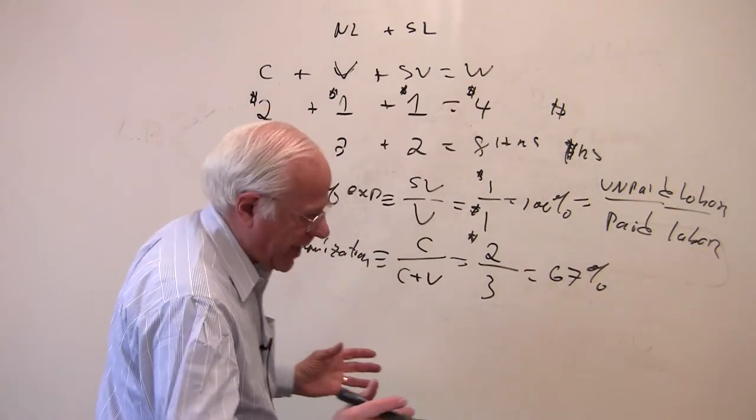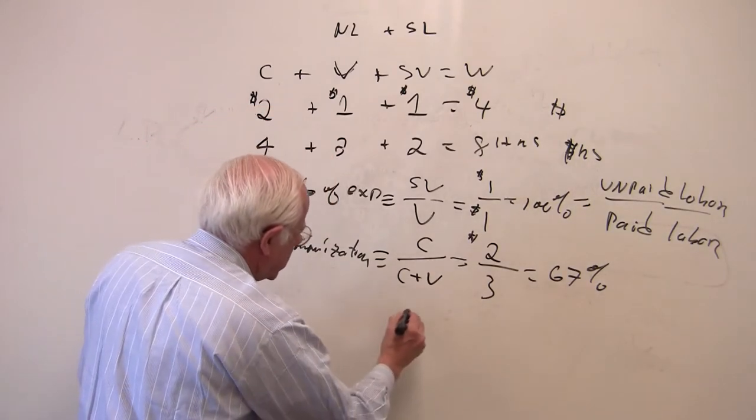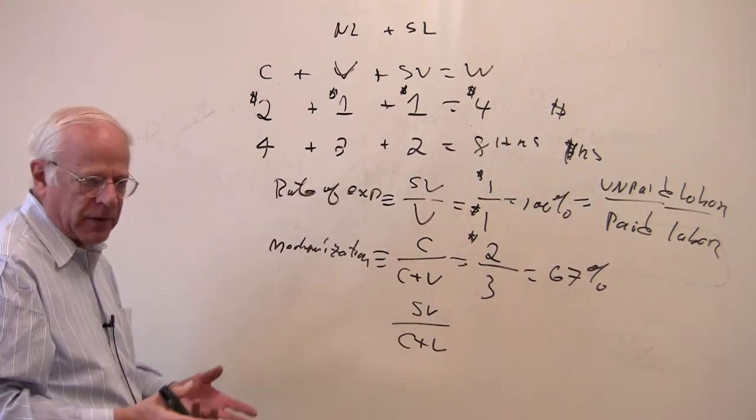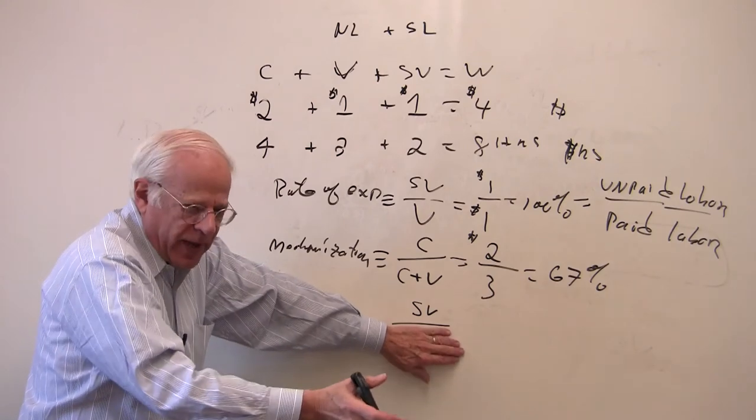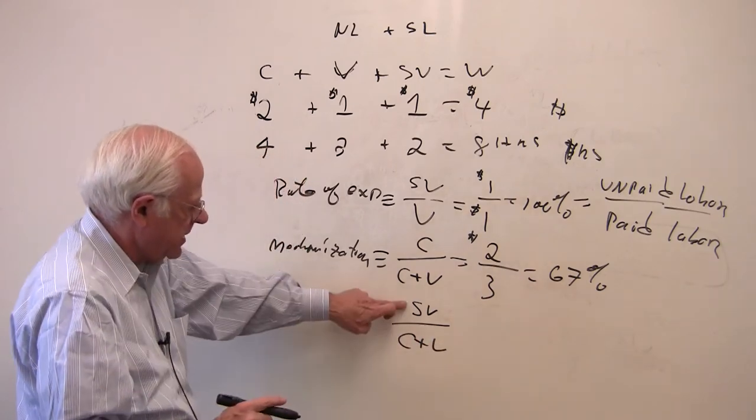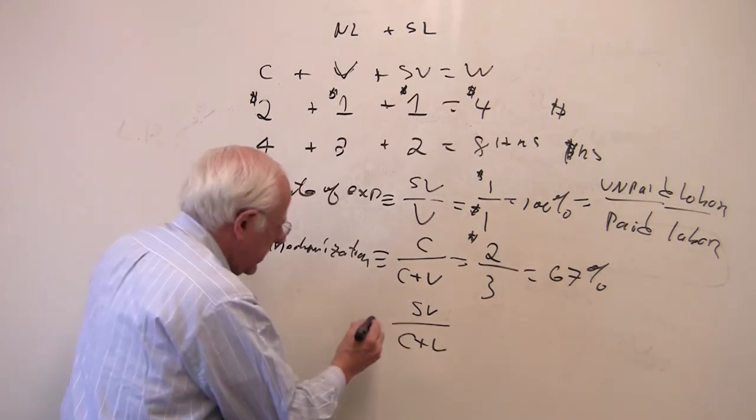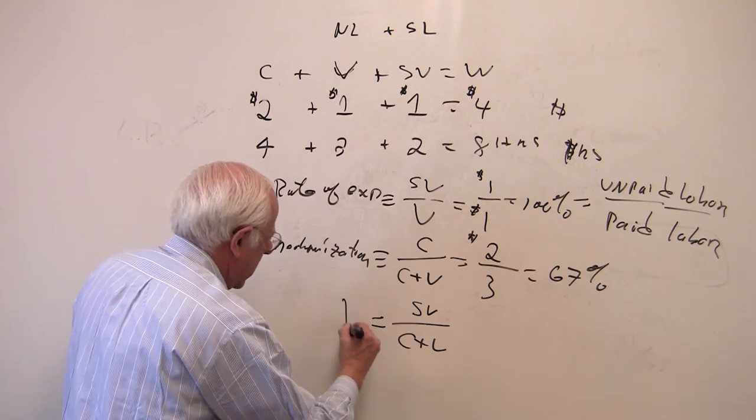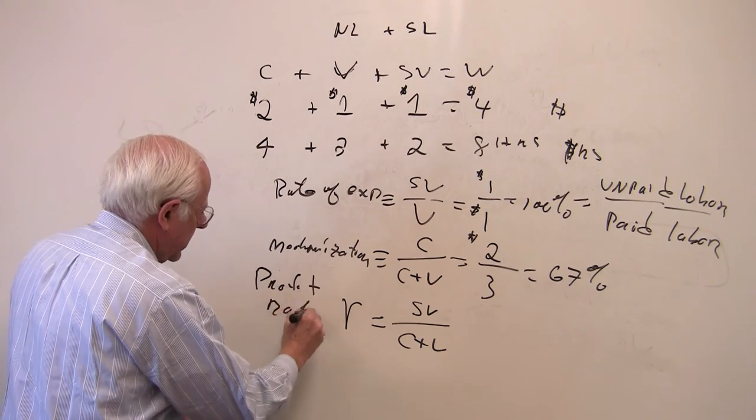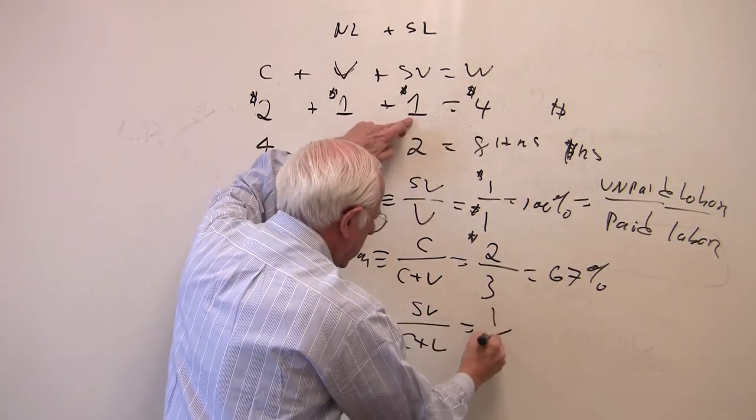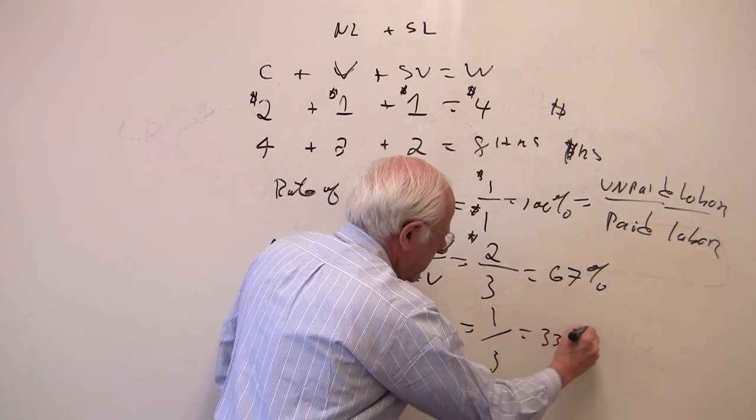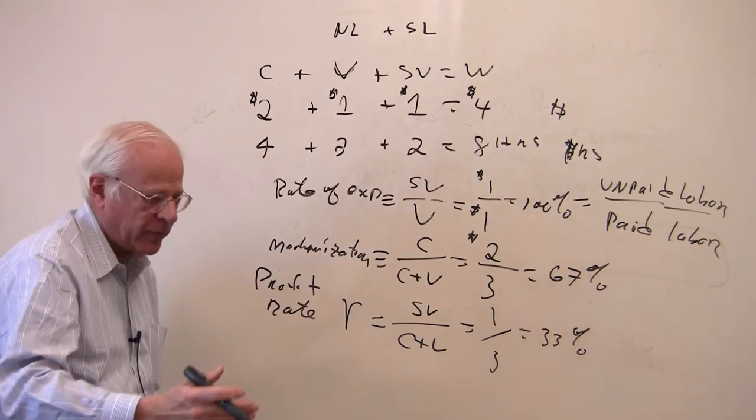The last one is what's the return to the capitalists? The last one that Marx develops is the ratio of surplus to the total capital that the capitalists has to expend. Don't forget, the capitalists has to expend on means of production plus the value of labor power, and this is the return. So this is called, by Marx, the profit rate. I'll call it little r, the profit rate, which in this particular case is $1 over 2 plus 1 is $3, 33%. 33 and a third percent.